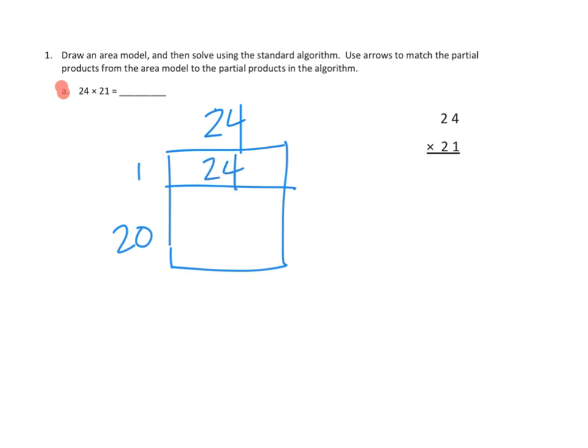And then our other problem we have to do is 20 times 24. Now we could do that in our head, we could think about it in unit form. Two 10s times 24 would mean that we'd multiply 2 times 24, that'd be 48. But it's 48 10s, so that would be 480. So there's our two partial products.